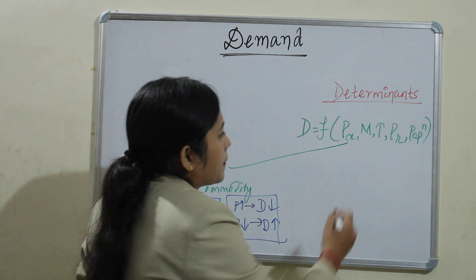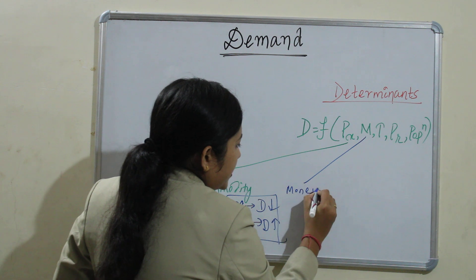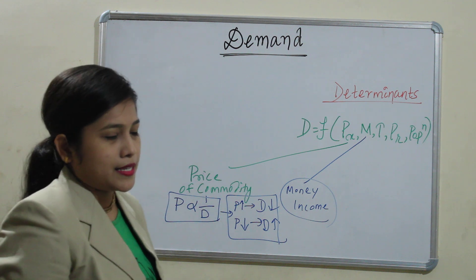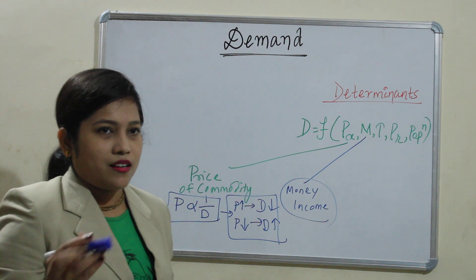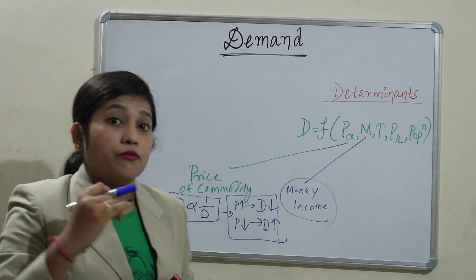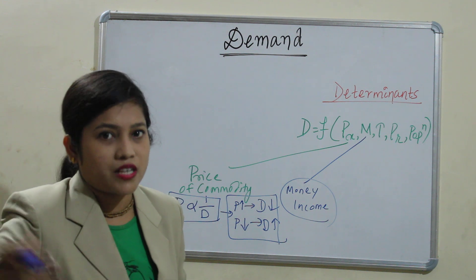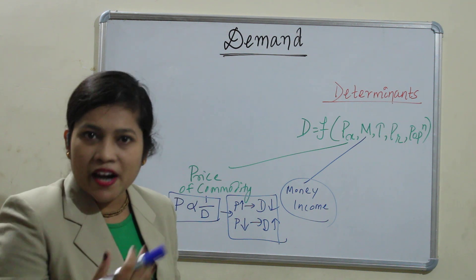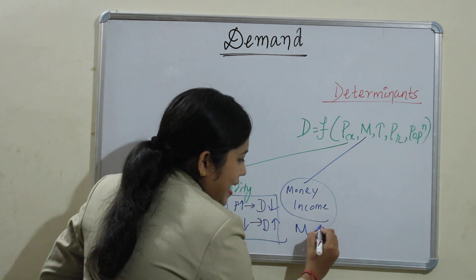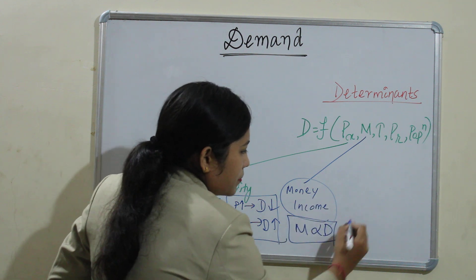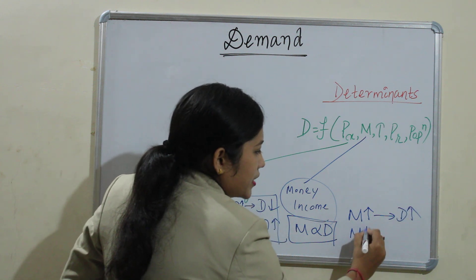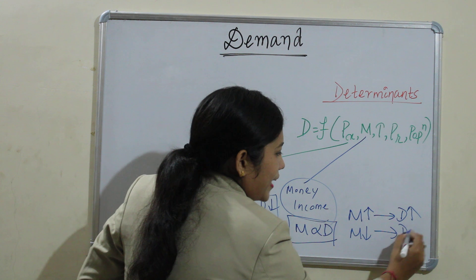Next is money income. How does money income affect demand? When your income is 20,000 and then increases to 30,000 or 40,000, obviously your demand will increase. So money income has a direct relation with demand — if money income increases, demand increases, and if money income decreases, demand declines.